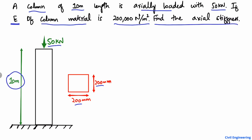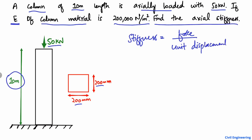To find the axial stiffness, we first have to define stiffness. Stiffness is the force required to produce a unit displacement or a unit deformation in a body or any object. This property is known as the stiffness of the object or stiffness of a material.